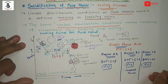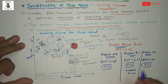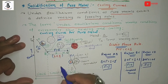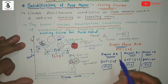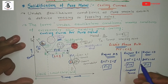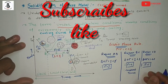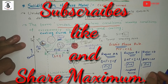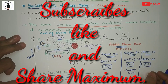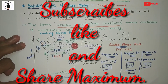I hope you understand the total solidification of pure metal with different cooling curves, validated by the Gibbs Phase Rule. If you liked this, please subscribe and share more of the Mechanical Engineering Tutorials. Thank you so much and keep watching.